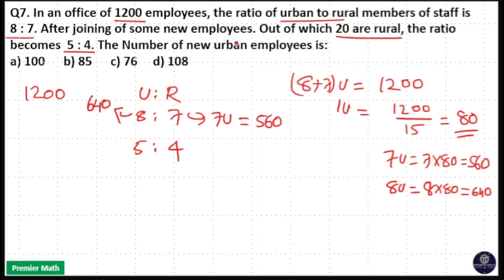After joining some new employees, out of which 20 were rural, 560 plus 20 equals 580 is the new rural count. That means 4 units equals 580.